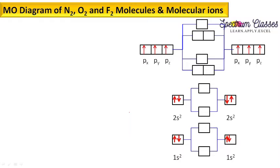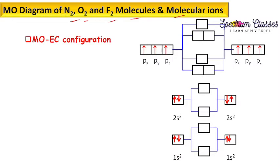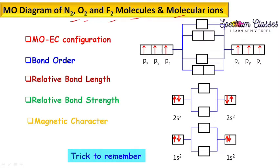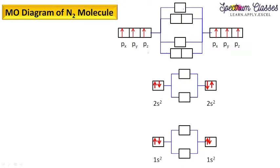Hello everyone, welcome back to Spectrum Classes. In my previous video, I discussed how to draw the molecular orbital diagram, and we covered several molecules. In this video, I am going to discuss how to draw the molecular orbital diagram for nitrogen, oxygen, and chlorine molecules, including their molecular orbital electronic configuration, bond order, relative bond length, relative bond strength, and magnetic character. I will also give you an amazing trick so you can easily memorize all such things without drawing the molecular orbital diagram — very helpful for class 11th and 12th students.